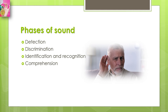The next phase is discrimination. In order to perceive and appreciate a sound, we have to be able to differentiate it from other background noise. For example, if you're at a restaurant or party where there is a lot of noise, you may not be able to hear what other people are saying. So in the phase of discrimination, we are able to discriminate between different sounds.